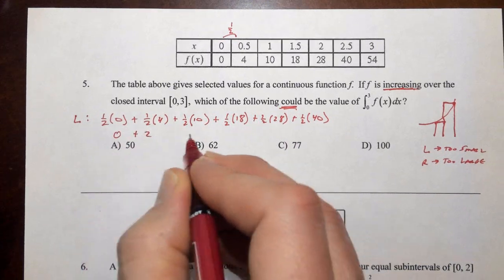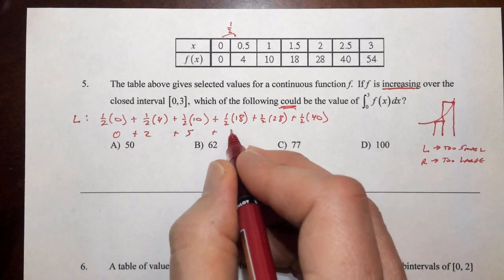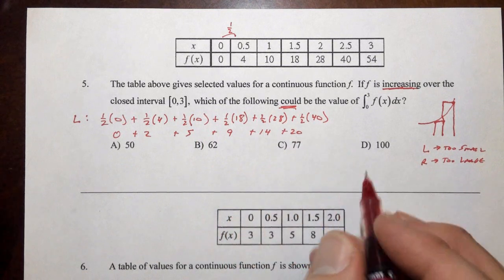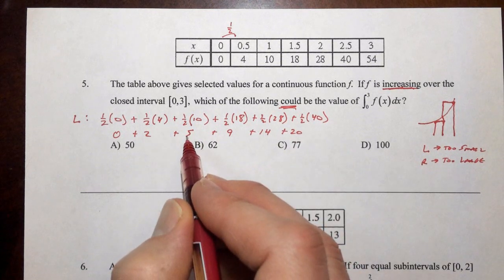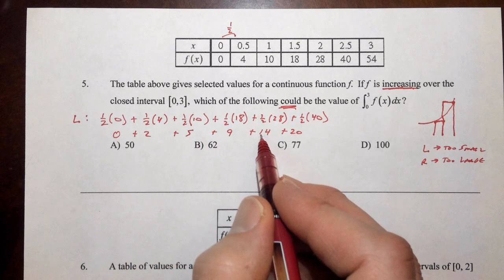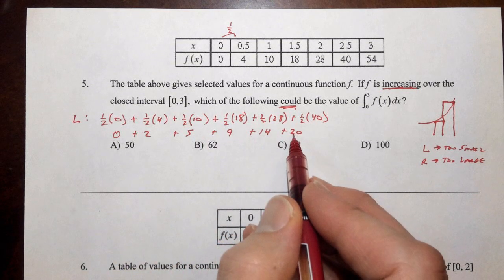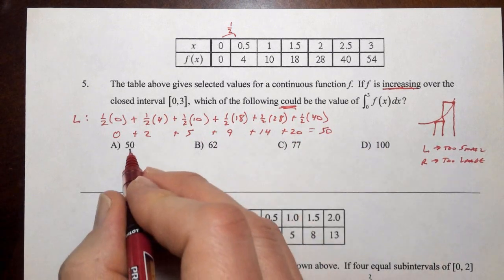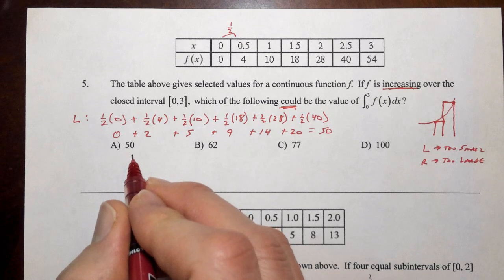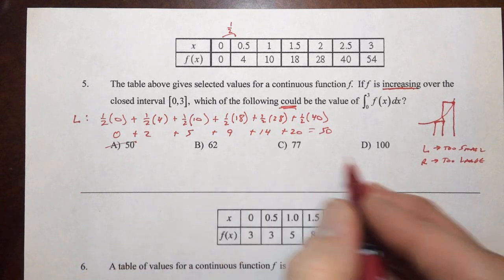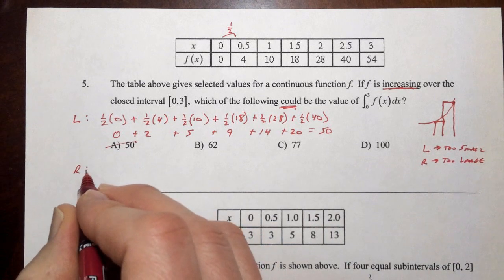So we're looking at zero plus two plus five plus nine plus fourteen plus twenty. Two plus five is seven. Seven plus nine is sixteen. Sixteen plus fourteen is thirty. Thirty plus twenty is fifty. So notice the fifty that we come up with, and fifty is one of our answers. This we know is too small. So fifty is out. But it's going to be bigger than fifty. But now watch what happens when we do a right sum.